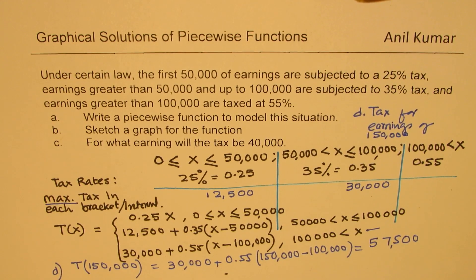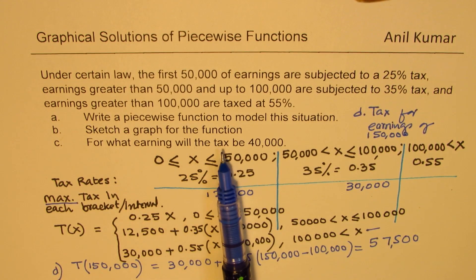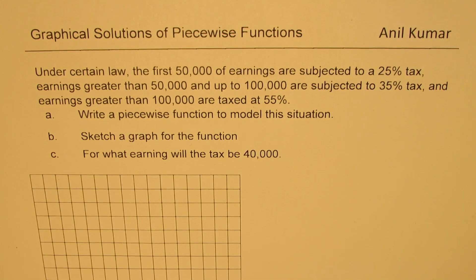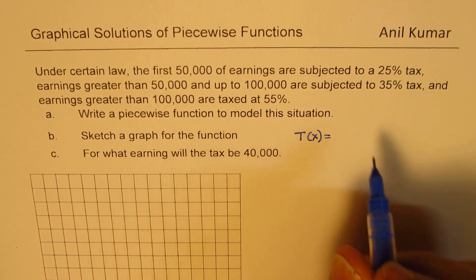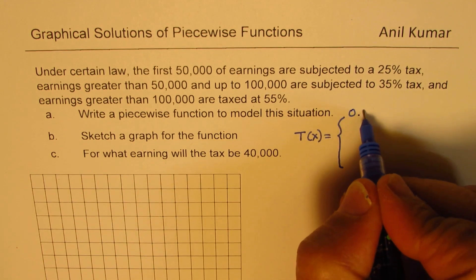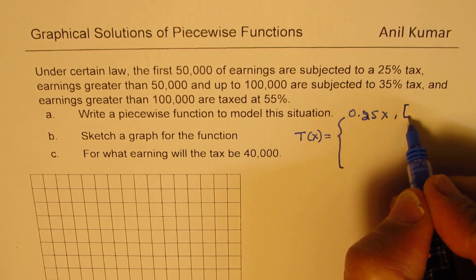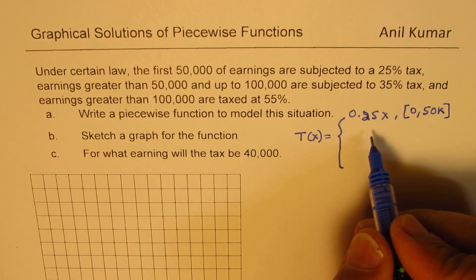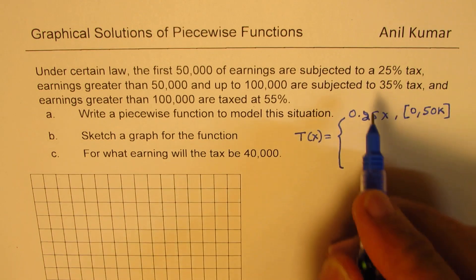So now in the next part, let us see how to sketch this graph and from the graph, for what earning will the tax be 40,000, which we'll get from the graph. In the first part, we've already seen what is the tax function here. The tax could be calculated from the earnings using the piecewise function. It was 0.25 when the earnings were from 0 to 50,000.